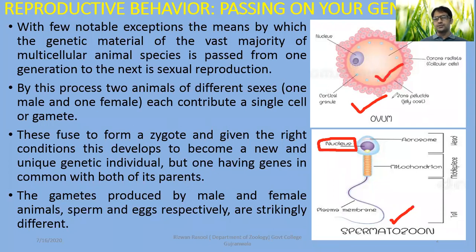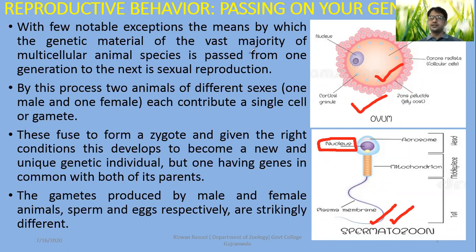Ovum and spermatozoon both contain genes, but there is also a difference between them in size and function. Notably, spermatozoa do not incorporate their organelles such as mitochondria — mitochondrial DNA will always be received from the maternal side, i.e., the ovum. The gametes produced by male and female animals — sperm and egg respectively — are strikingly different in various aspects, the most prominent being their size.